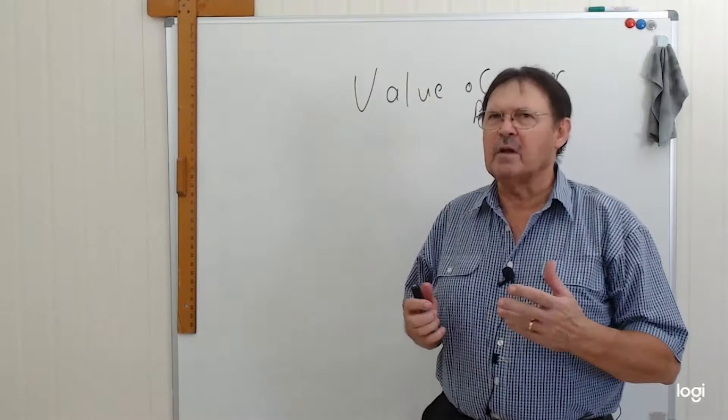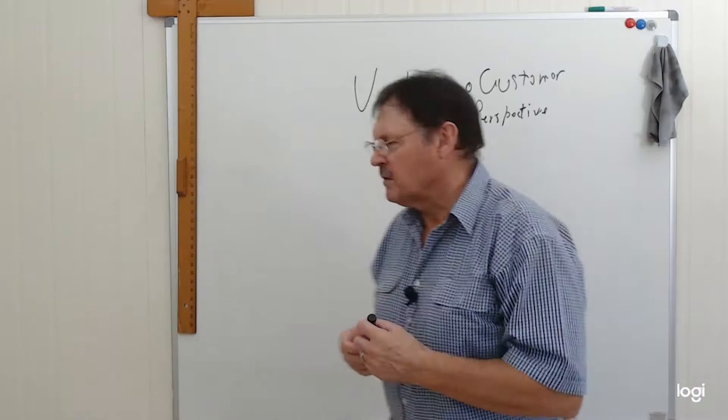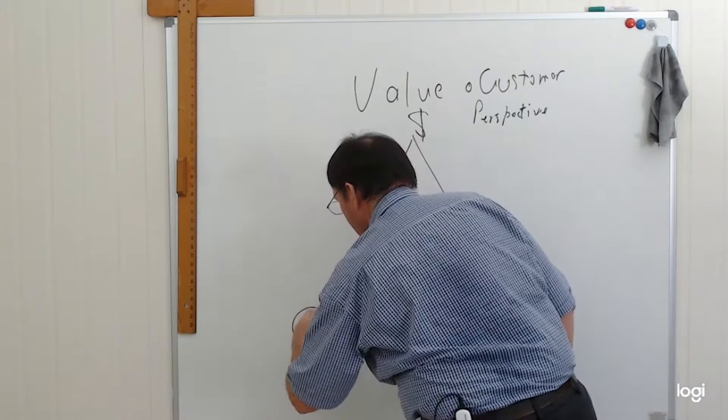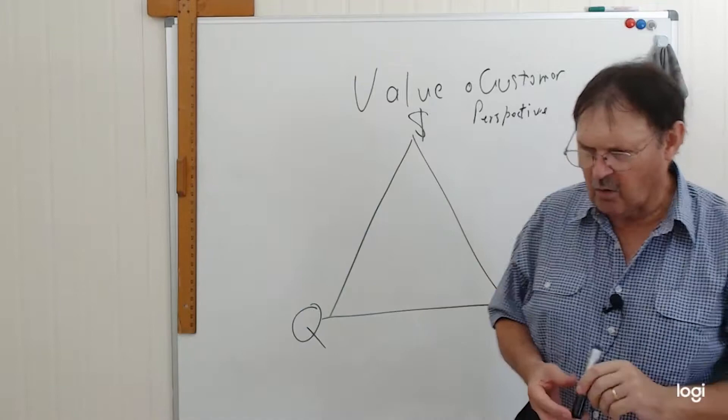From a customer's point of view, I tend to break it up into the value triangle. I don't know whether you've heard of the value triangle before, but it's a really important concept. The value triangle is defined by three points: the first one is price, the next one's quality, and this one's convenience or location or access.